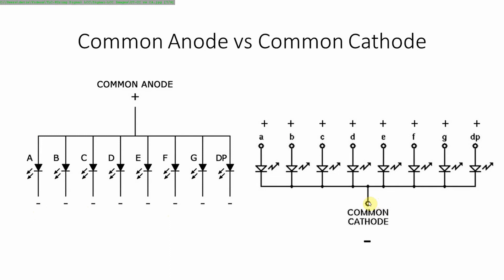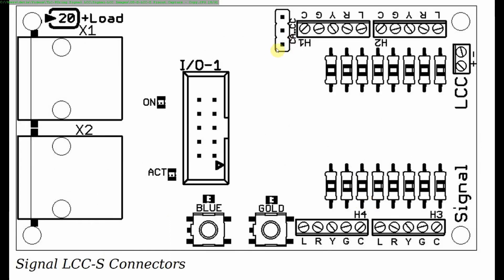Anyway, so what's really cool about the signal LCC is depending on how you fix this jumper, you can do common anode or common cathode. Now it only applies one way. You can't have half of these common anode and the other half common cathode. What you got to do is pick which way you want to wire out your signal LCC. But what's cool here is that you can get all these to play together with either system.